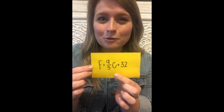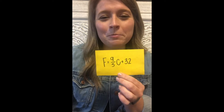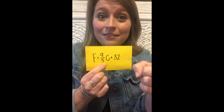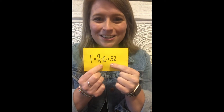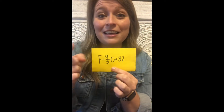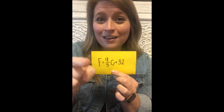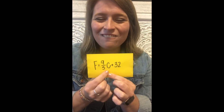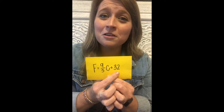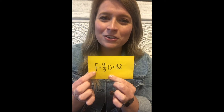Let's look at a song that helps us remember this formula. When I point to you, you repeat after me. It goes like this: 9 fifths times C — plus 32 — equals Fahrenheit — conversion. 9 fifths times C, plus 32, equals Fahrenheit, conversion.